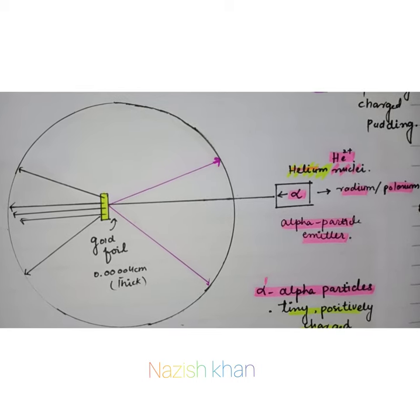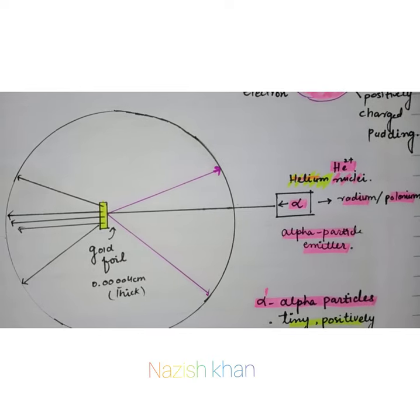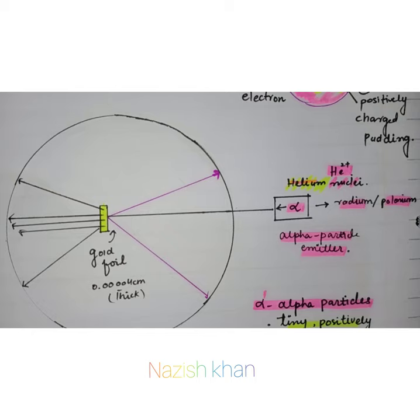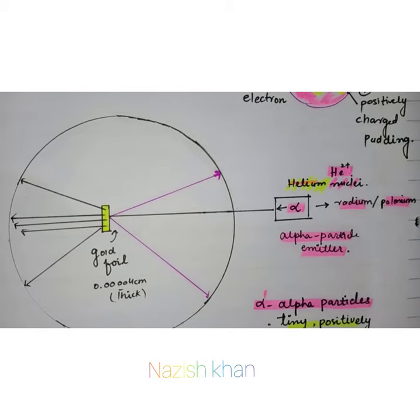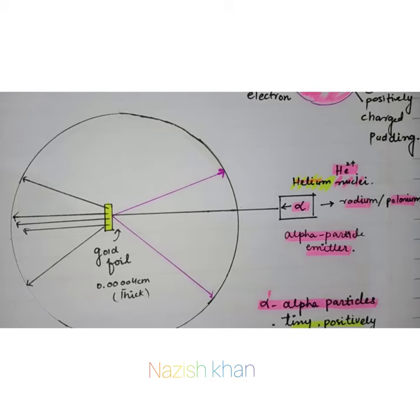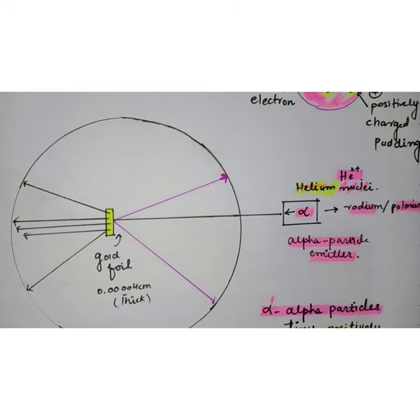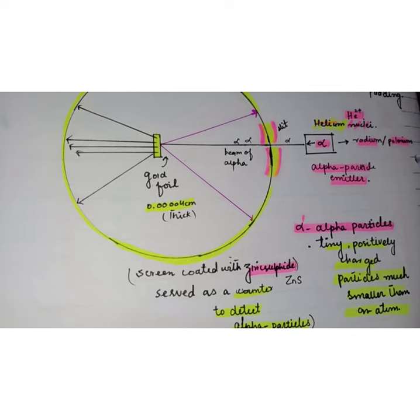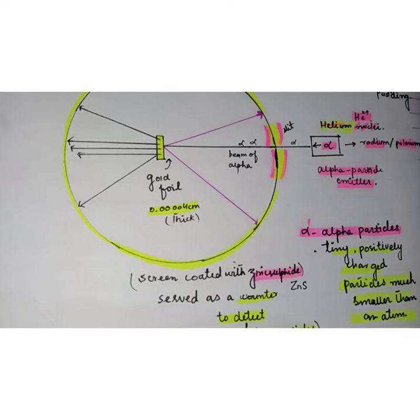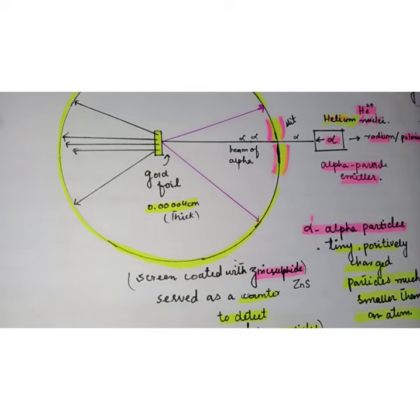A radioactive source emitting alpha particles was enclosed within a protective lead shield. These positively charged particles are identical to the helium atom nucleus and 7000 times more massive than electrons. The radiation was focused into a narrow beam after being passed through a slit in the lead screen. A thin section of gold foil was placed in front of the slit.